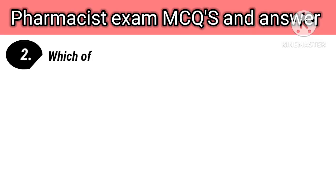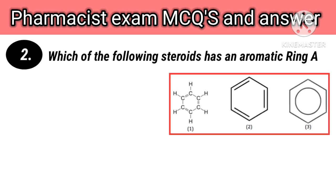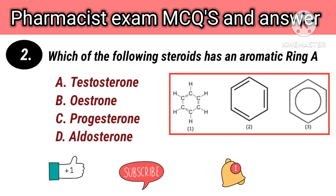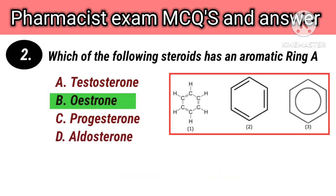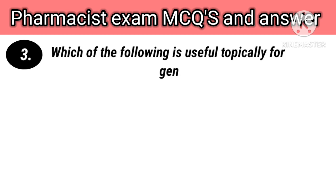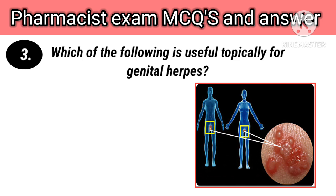Which of the following steroids has an aromatic ring? Options: A. Testosterone, B. Estrone, C. Progesterone, D. Aldosterone. Right answer is B. Estrone.